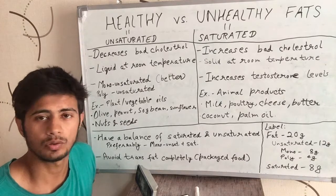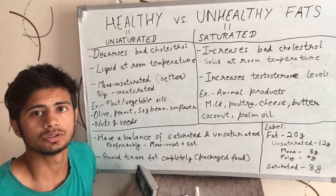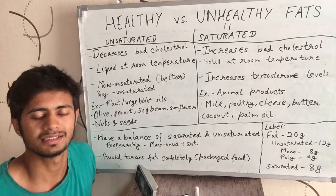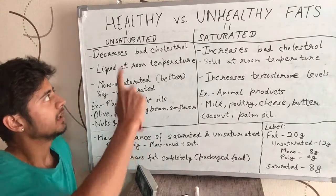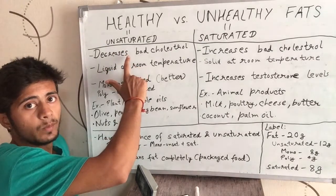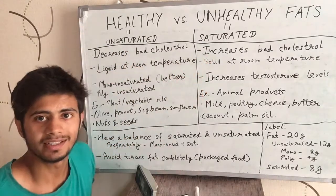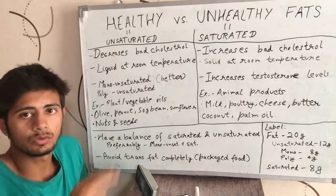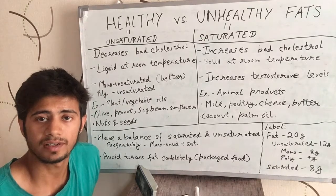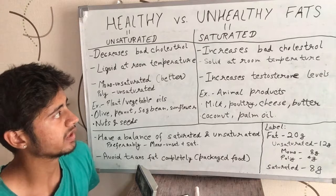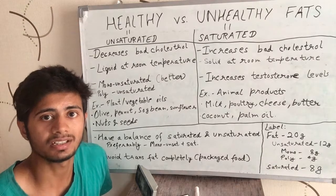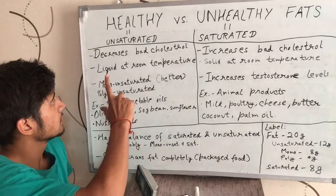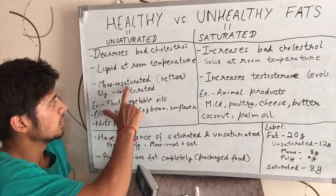There are two types of cholesterol: bad cholesterol and good cholesterol. Good cholesterol is good for your body; bad cholesterol is bad for your body. To summarize: unsaturated fats decrease bad cholesterol, while saturated fats increase bad cholesterol. Another way to distinguish them is their state at room temperature — healthy unsaturated fats are liquid at room temperature, while saturated fats are solid at room temperature, and that is the case most of the time.